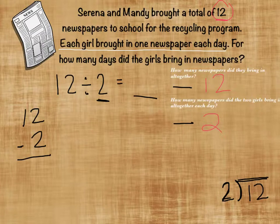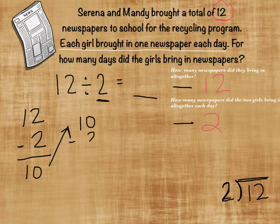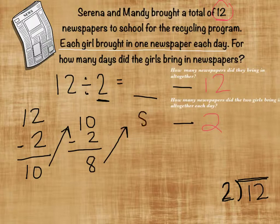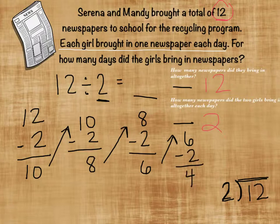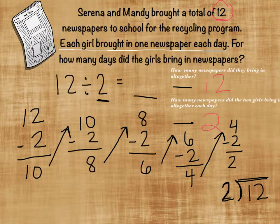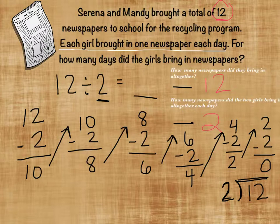So the first day the girls brought in 2. 12 minus 2 is 10. Let's bring the 10 up. 10 minus 2 is 8. We're going to subtract again because we're not at 0 yet. 8 minus 2 is 6. Bring up that 6 and subtract 2 again — 6 minus 2 is 4. 4 minus 2 is 2. That's not 0, so we keep going. 2 minus 2 equals 0. We are at 0.